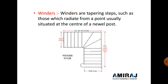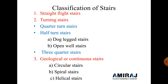The next type of step is the winder. Winders are tapering steps which radiate from a point usually situated at the center of a newel post. As seen in the figure, winder steps are provided at the corner side, fixed from a single center. The winder step changes direction without any landing. The size of winder steps depends on the area given for construction of the steps, the required number of steps, and the height of the building.